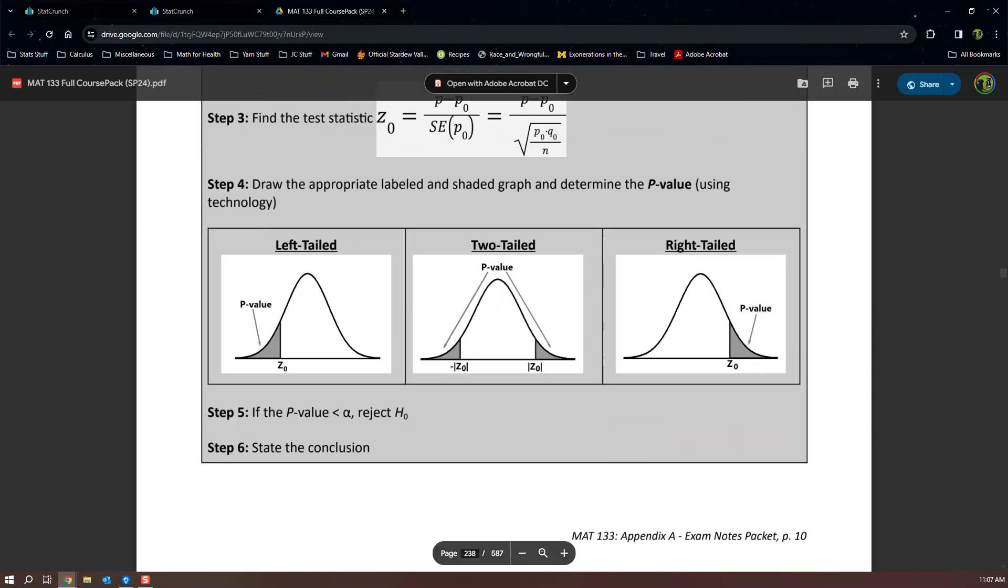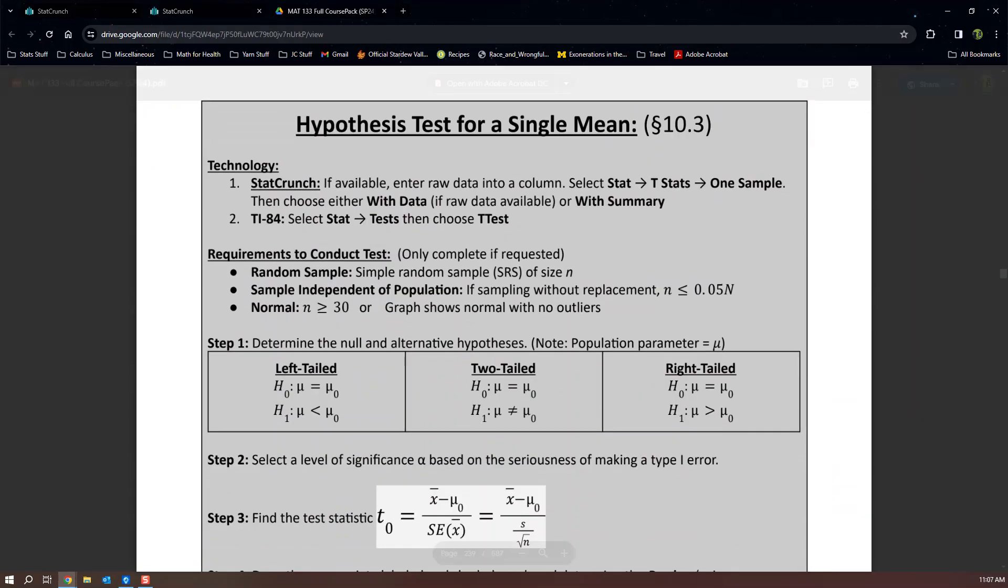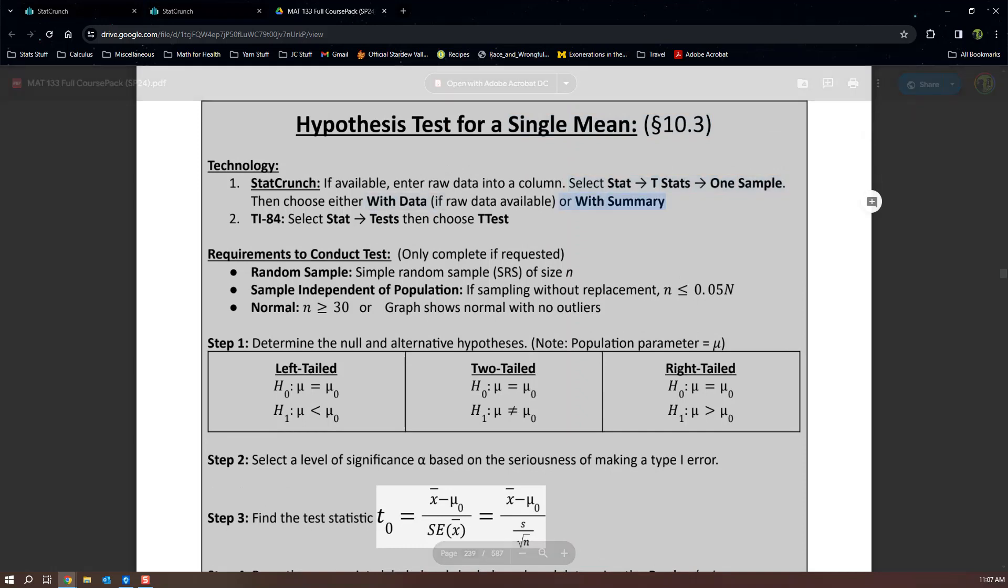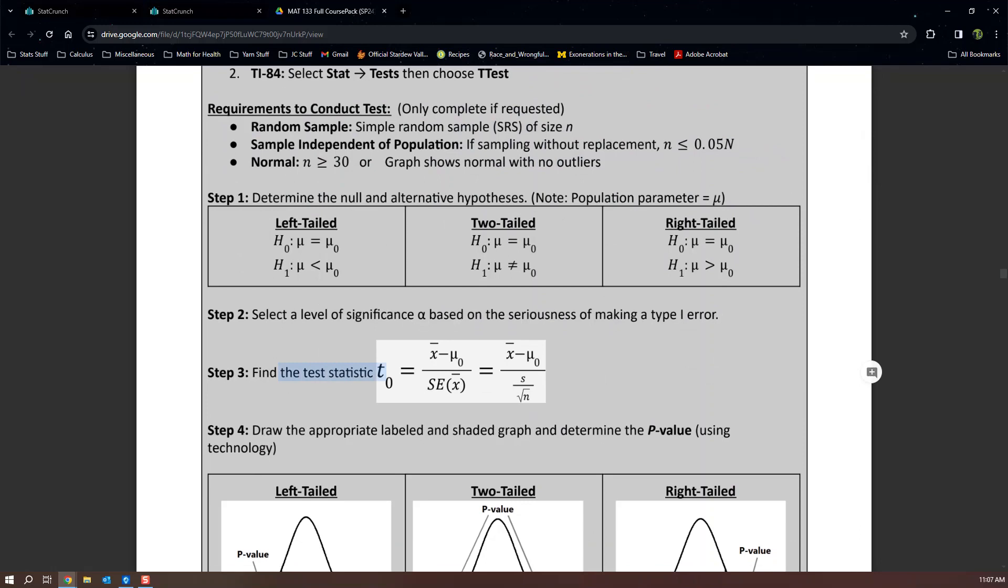In the course pack, it's not Section 10.2, it's Section 10.3—the test for a single mean. You can see the technology right here: Stat, t-stat, one sample. If you have a data table, you say 'with data.' If you're just given the mean and standard deviation, you say 'with summary.' So it depends on which one you're working with. And you can see your test statistic is t₀ right here.